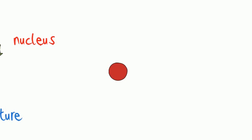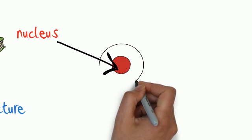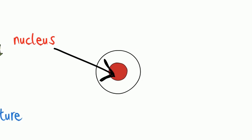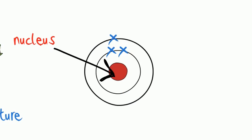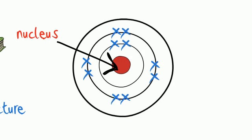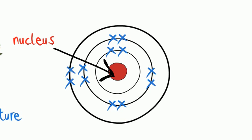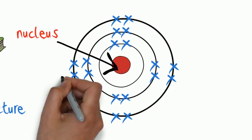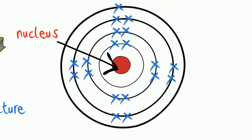In my atomic structure video scribe, we learnt that orbiting the nucleus are electrons, and these are in energy levels. In the first energy level, up to 2 electrons can be found. The second energy level can hold up to 8 electrons. The third energy level can hold up to 8 electrons initially, then when 2 electrons are in the fourth energy level, the third energy level can then hold up to 10 more electrons, making 18 in total in the third energy level.